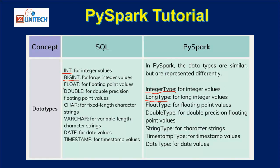Next, for float and double — we have floating values and precision floating values. Inside PySpark we have FloatType and DoubleType. Simply, we only add the word 'Type' at the end of the SQL data type name. So inside SQL we have double, and in PySpark that becomes DoubleType. We have float, so that becomes FloatType. We have bigint, so that becomes LongType.